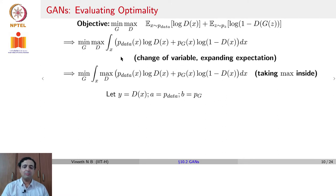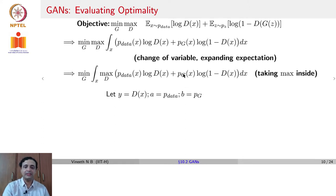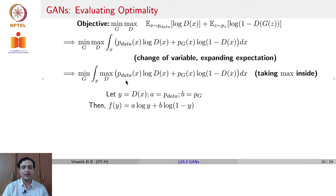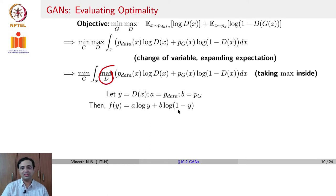To understand what the max of such a function would be, let us write it out using some variables. Let y equal d(x), a equal p_data, and b equal p_g. Then we can write the entire integrand as f(y) = a log y plus b log(1 minus y), where a is p_data and y is d(x).